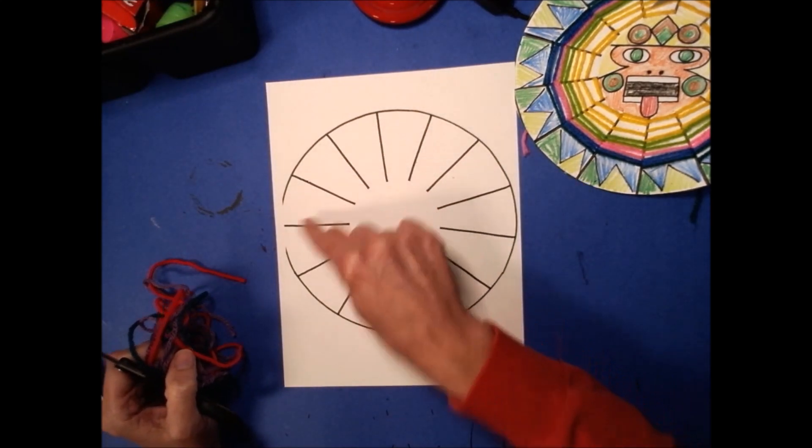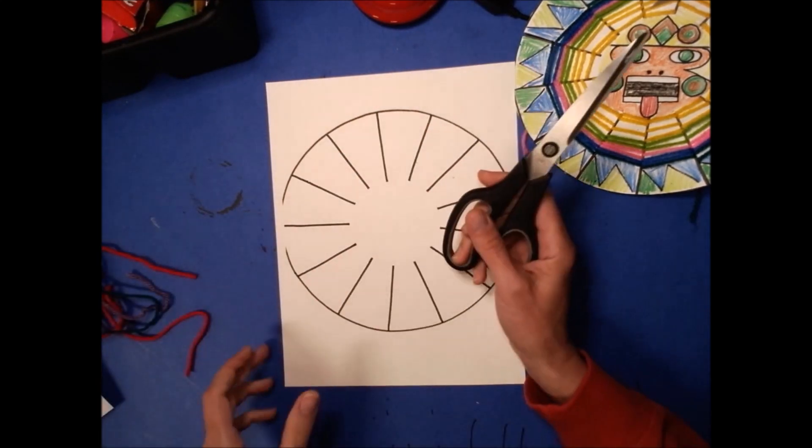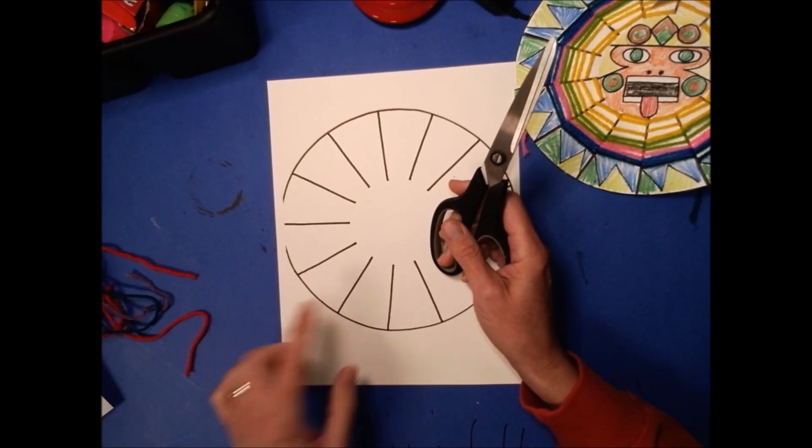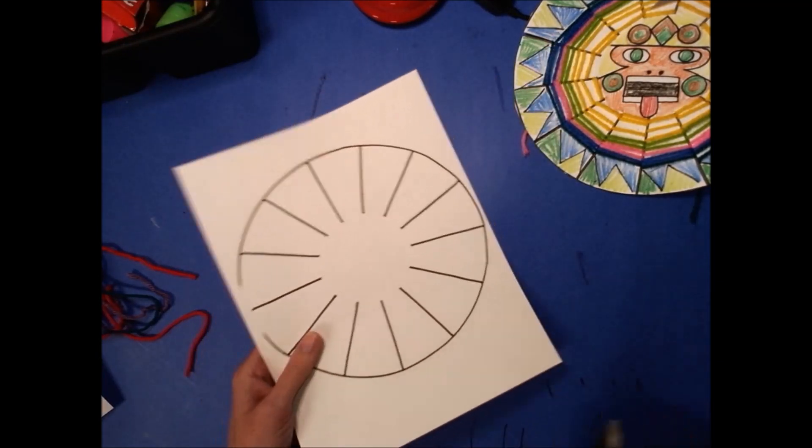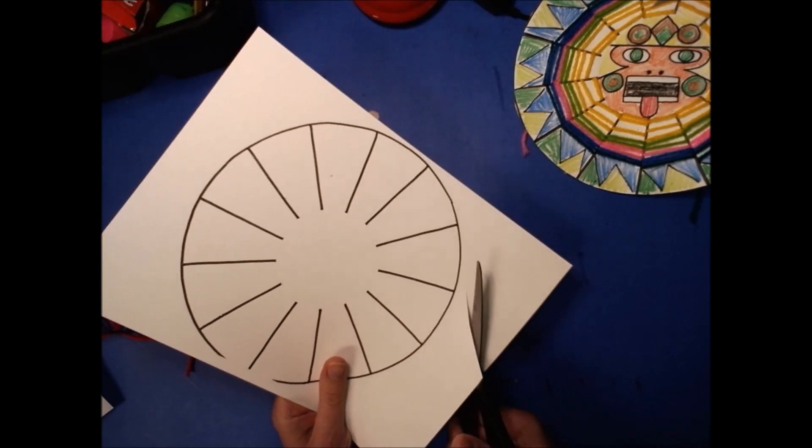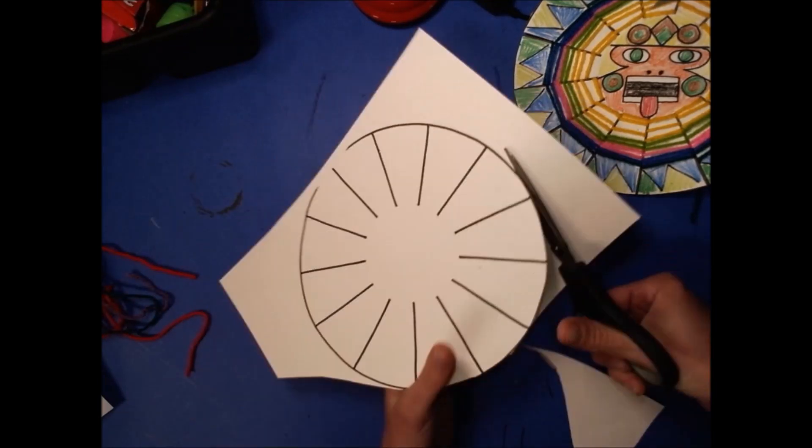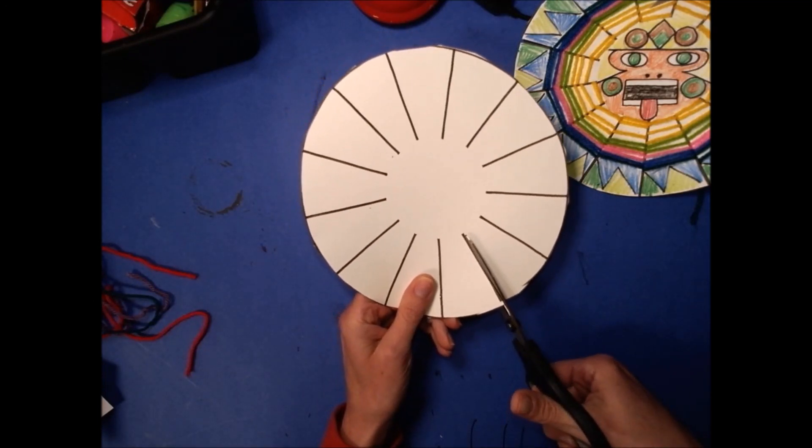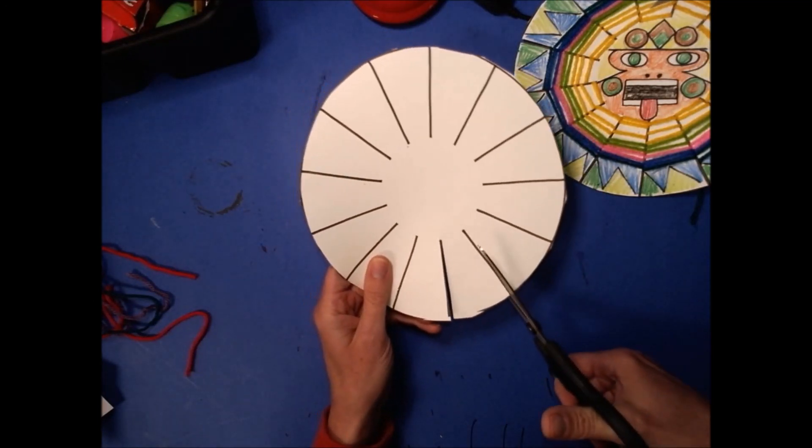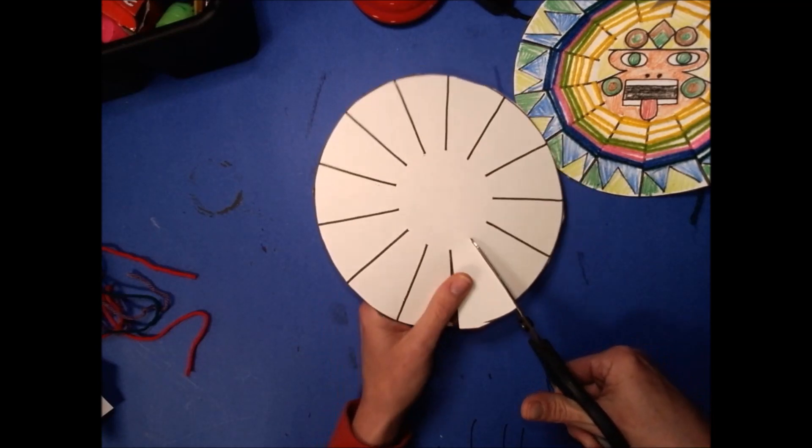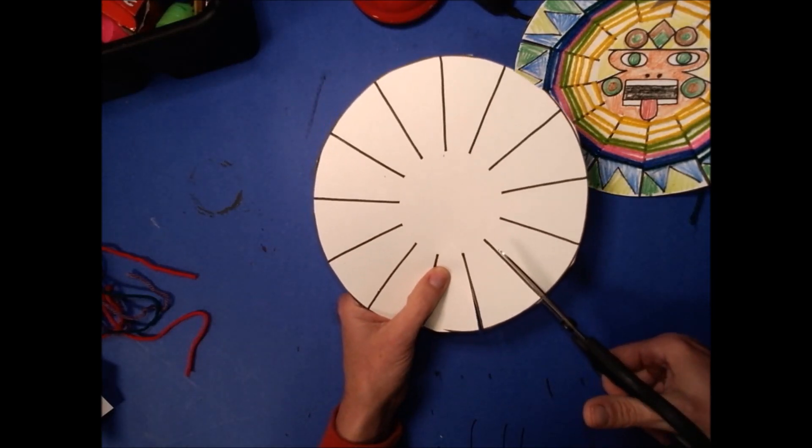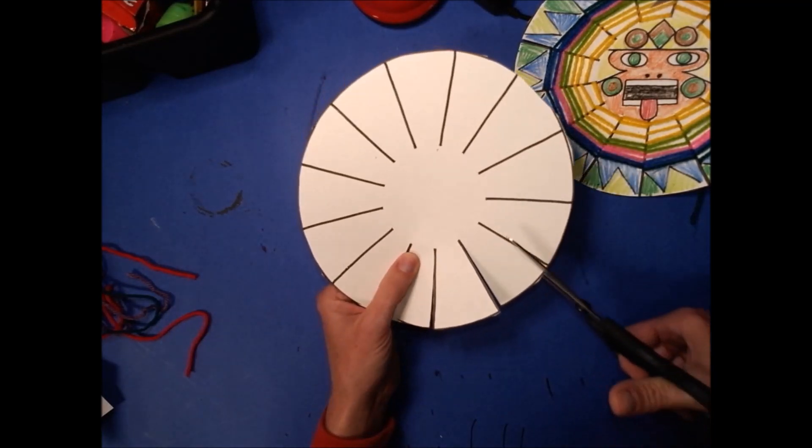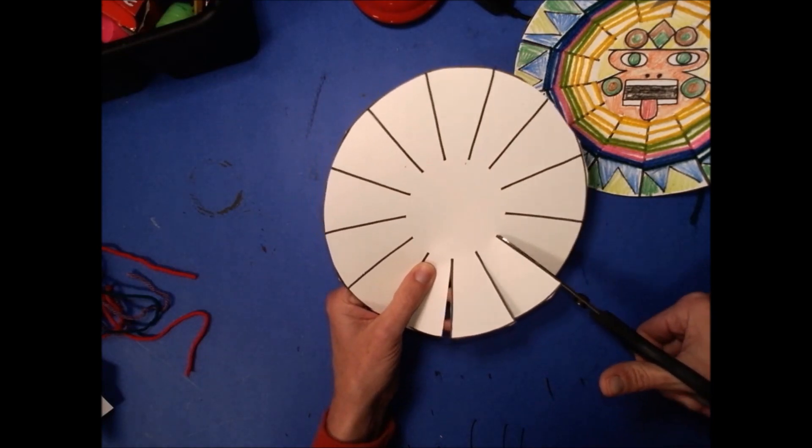So the first thing I'm gonna do is cut out my circle and I'm gonna cut along each one of my 13 lines. Like I said, if you're at home you're gonna make one with a paper plate. Any odd number is fine: 11, nine.